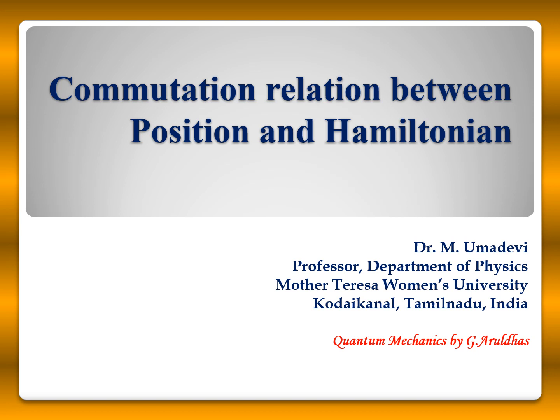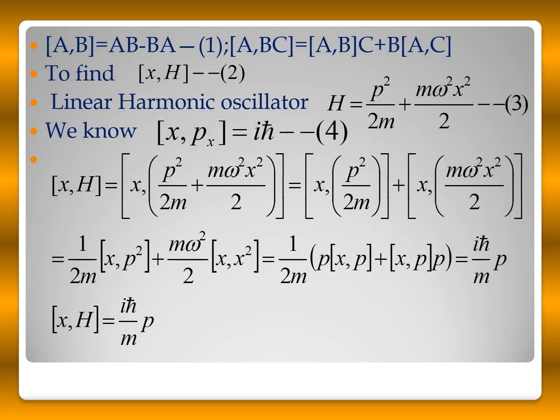Now we'll see how to derive the commutation relation between position and Hamiltonian. Generally, for the commutation relation between any two operators, [a, b] is equal to ab minus ba. Here we have to find out the commutation relation between the position and Hamiltonian, that is between x and H. For the Hamiltonian of a linear harmonic oscillator, H is equal to p squared by 2m plus m omega squared x squared by 2.